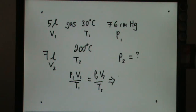P1V1 should be 76 times 5. And T1 is 30 plus 273, which is 303.